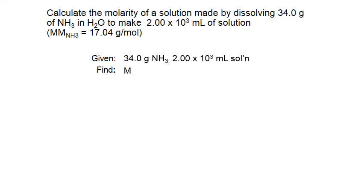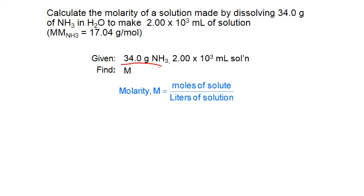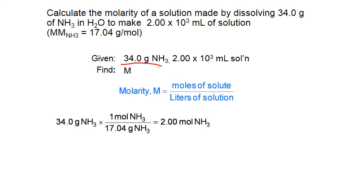We're asked to find the concentration in molarity (capital M), and we know the formula is moles of solute per liter of solution. The units of what we're given don't match what we need, so we need to convert grams of solute into moles by dividing by the molar mass. The molar mass of NH3 is 17.04 grams per mole. So 34 grams divided by 17.04 grams per mole gives us 2.00 moles of ammonia.